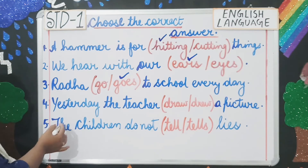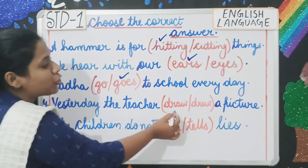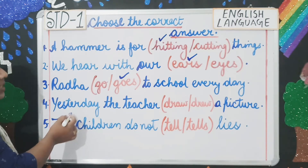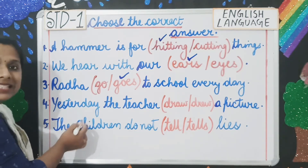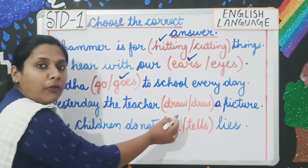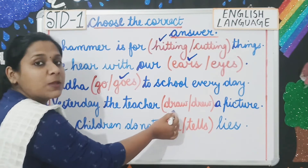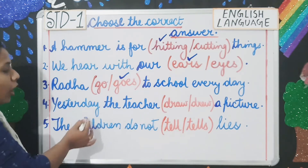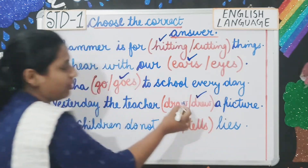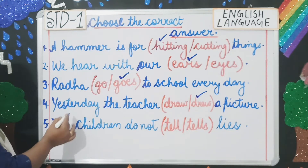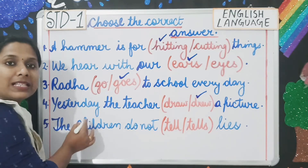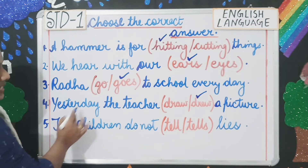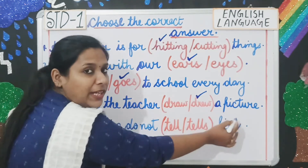Number four: 'Yesterday the teacher draw / drew a picture.' We are talking about yesterday, so the sentence is in past tense. 'Draw' is present tense and 'drew' is past tense of draw. So the answer is: 'Yesterday the teacher drew a picture.'